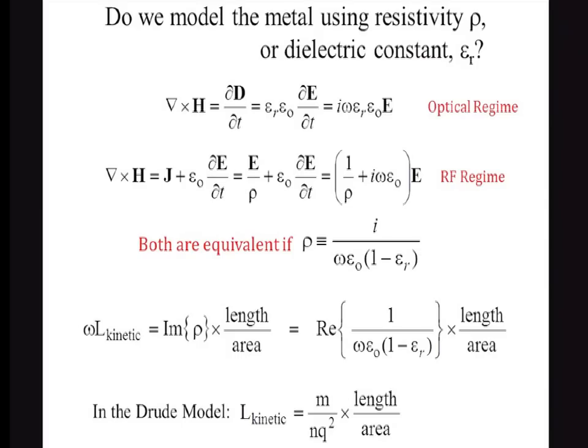Should we use resistance like in a circuit, or a dielectric constant like we do in optics? You could go either way. In the optical regime, this is Ampere's law with the relative dielectric constant of the metal. Or we can take the viewpoint that it's about a circuit, depending upon the resistivity. Both versions of Ampere's law are perfectly acceptable and equivalent if we make the connection between the resistivity of the metal and the dielectric constant of the metal.